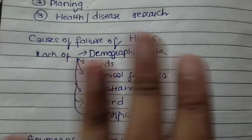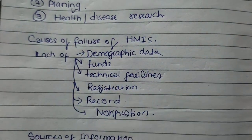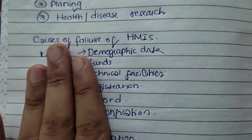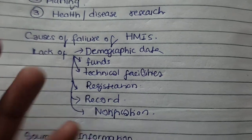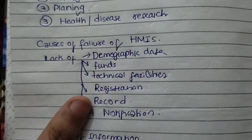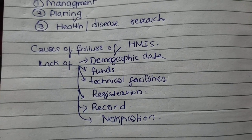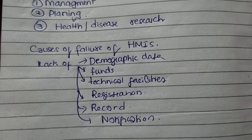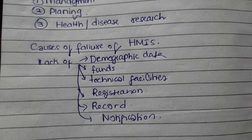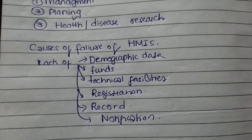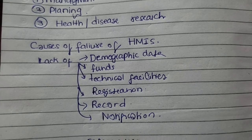Now, why did the information system fail? First, demographic data and statistics are not proper. Second, funds are very low for health. Third, there are no technical facilities. Fourth, the registration, recording, and notification of disease are inadequate. These are the reasons why HMIS failed.